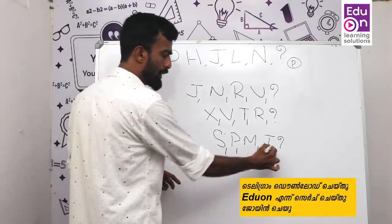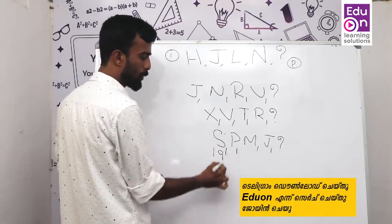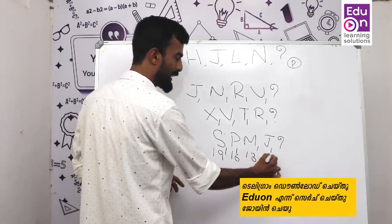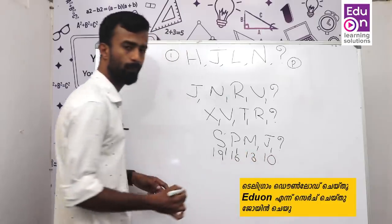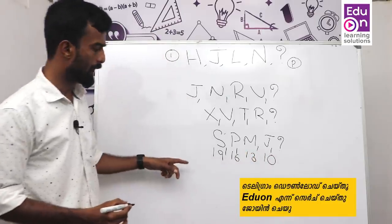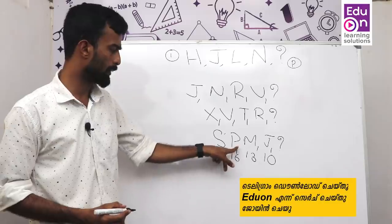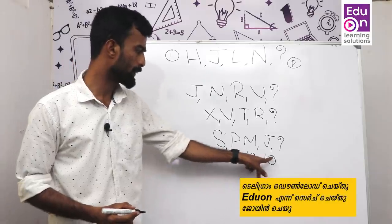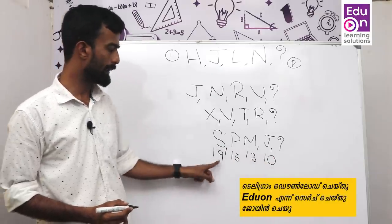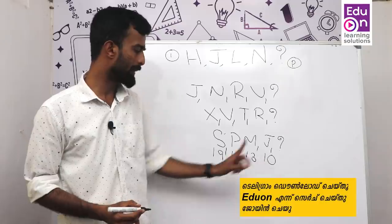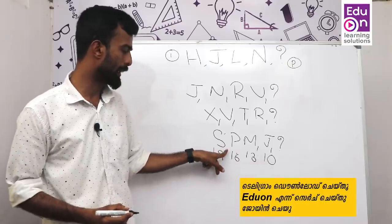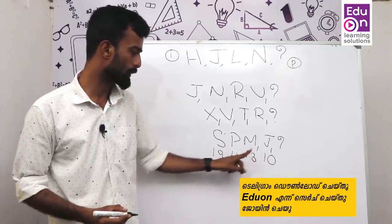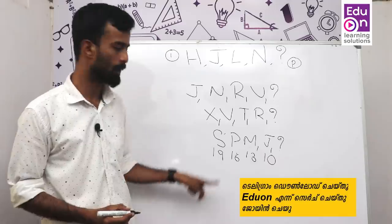I will write the answer to the question. The letters with their positions: S is 19, P is 16, M is 13, J is 10. Looking at the number series: 19, 16, 13, 10 — the difference is 3 each time.